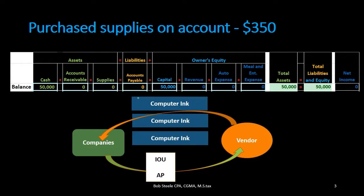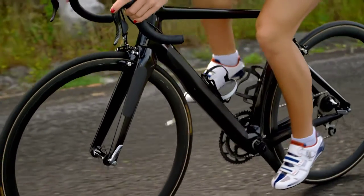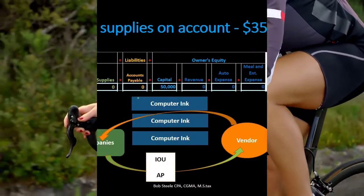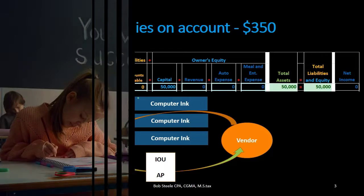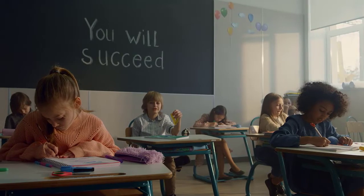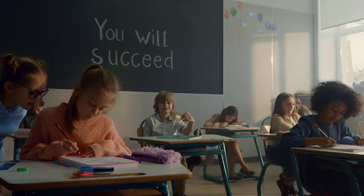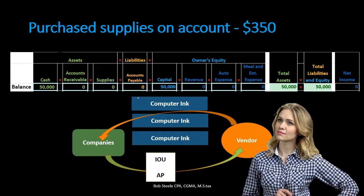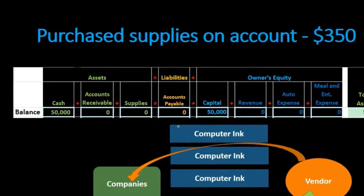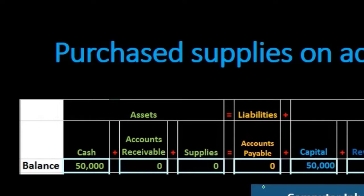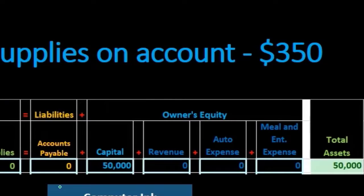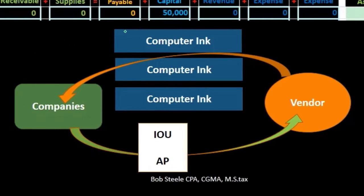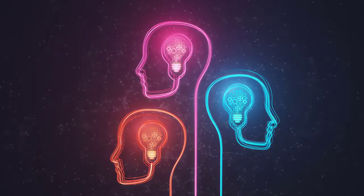In practice, you might work in a particular cycle like the accounts payable cycle and deal with the same types of transactions to specialize. Learning by cycles is also easier because those processes form a linked group of transactions. This helps you understand which transactions go together, so in later problems you can assume what happened before — for example, paying off something that was purchased on account.